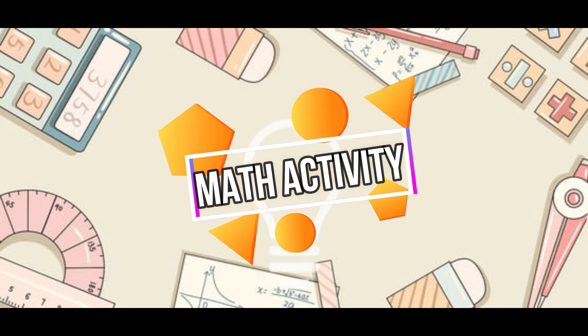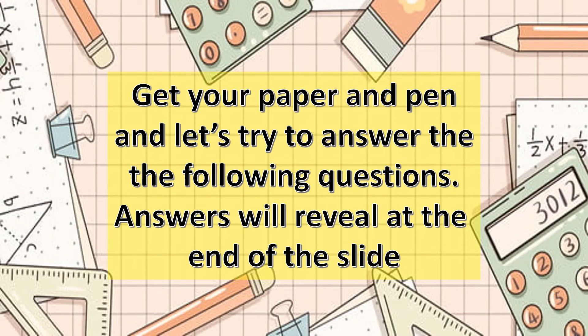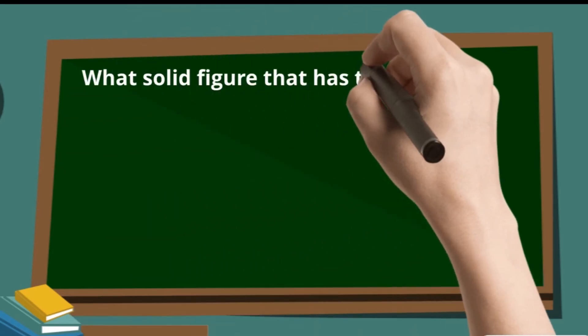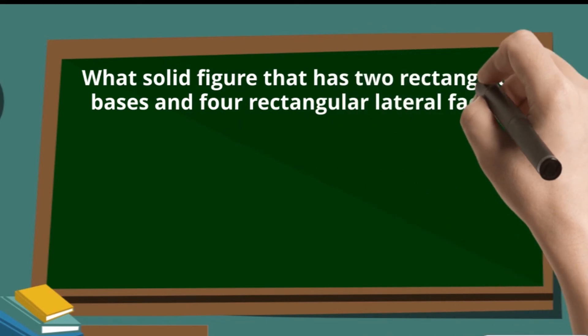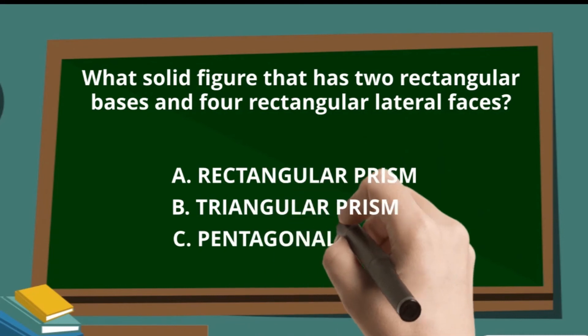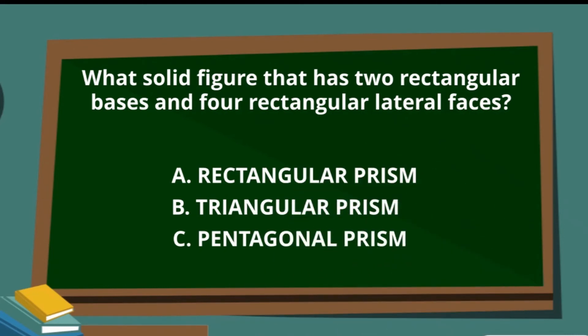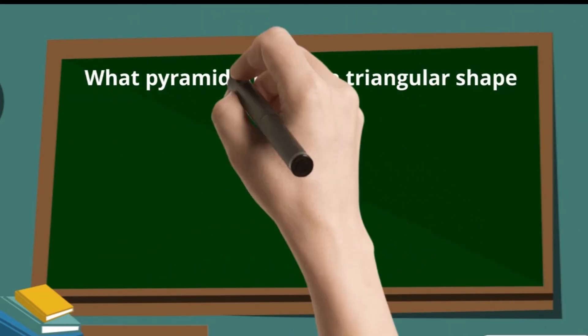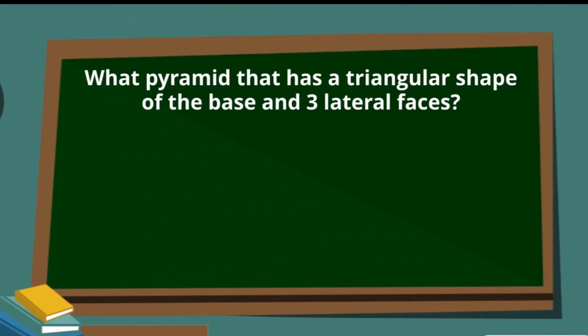It's math activity time! Get your paper and pen and let's try to answer the following questions. Answers will be revealed at the end. Question 1: What solid figure has two rectangular bases and four rectangular lateral faces? A. Rectangular prism, B. Triangular prism, or C. Pentagonal prism. Question 2: What pyramid has a triangular shape of the base and three lateral faces? A. Rectangular pyramid, B. Triangular pyramid, or C. Pentagonal pyramid.